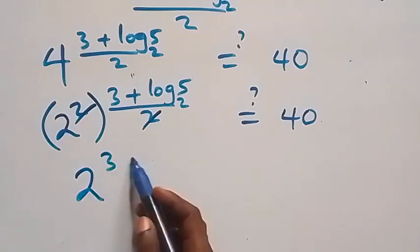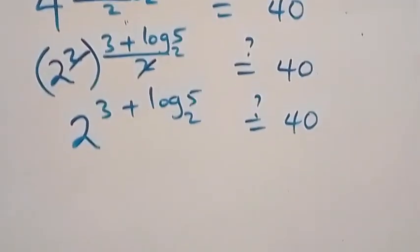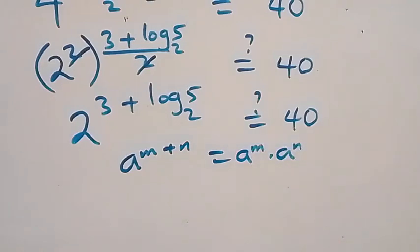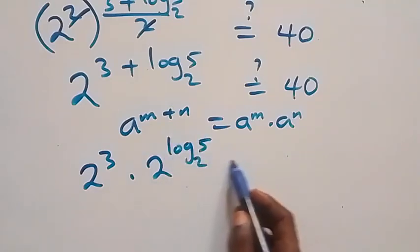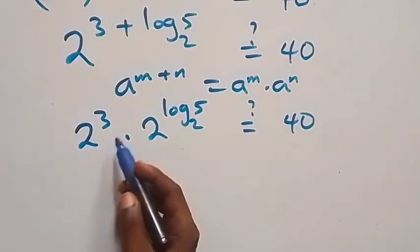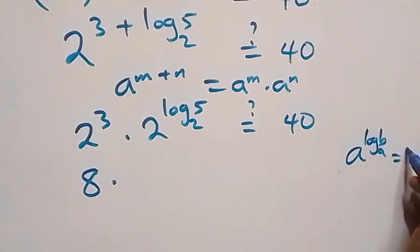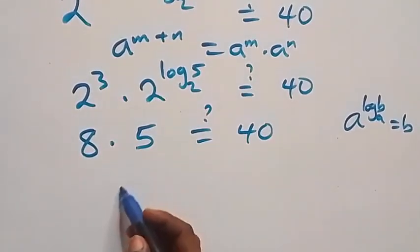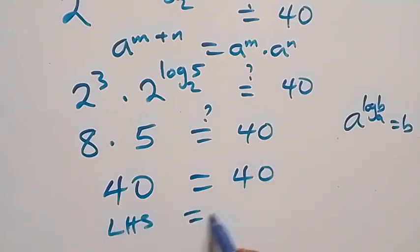The 2 in the exponent denominator cancels with the squared, giving 2 raised to power (3 + log base 2 of 5). Applying the exponent addition rule, this becomes 2 raised to power 3 times 2 raised to power log base 2 of 5. That is 8 times 5 — since 2 raised to log base 2 of 5 equals 5 — which equals 40. So the left-hand side equals the right-hand side.